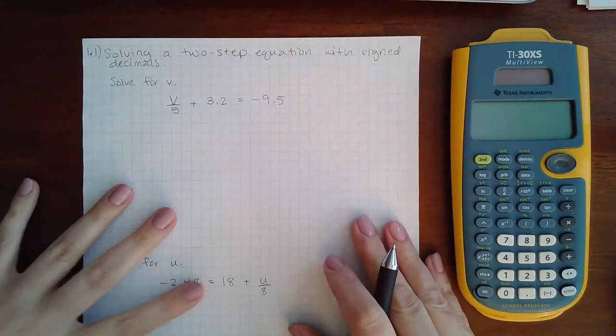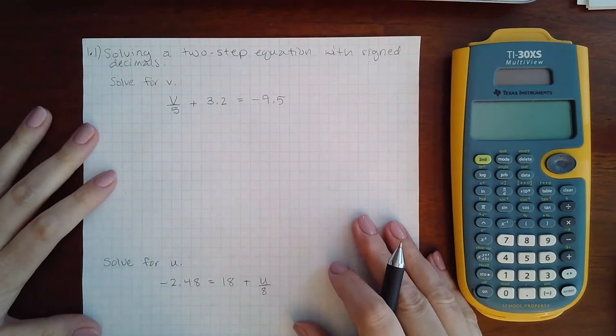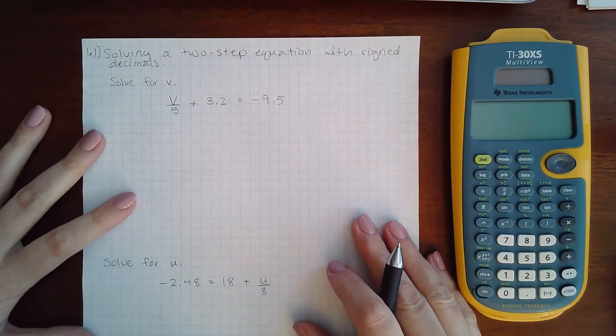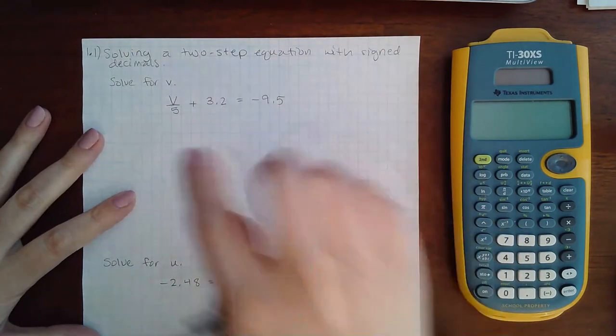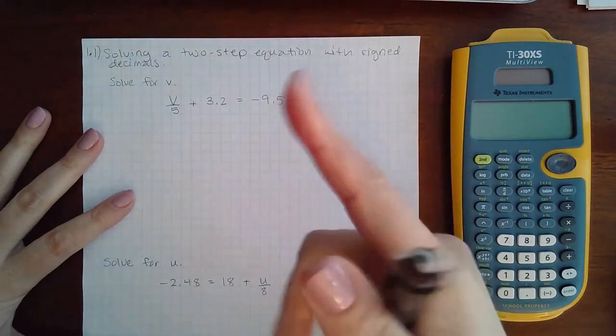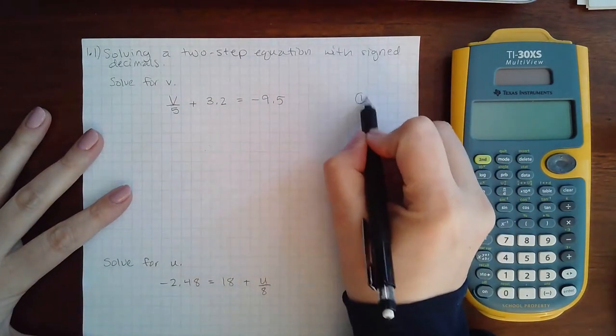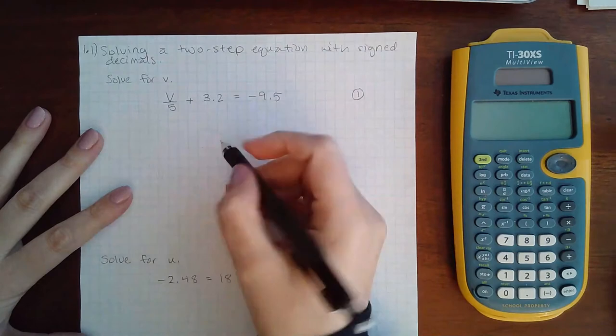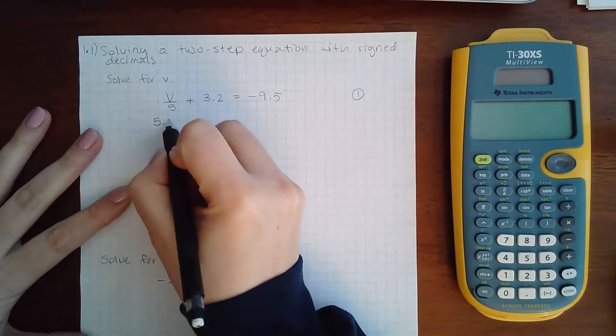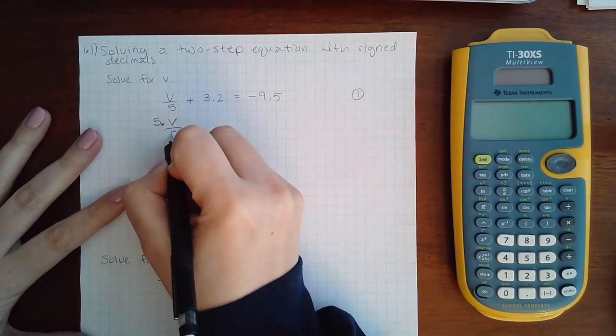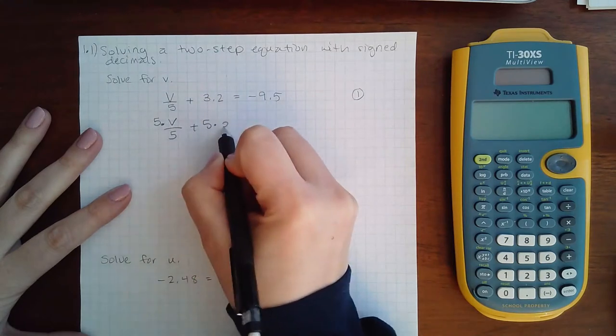Here we have solving a two-step equation with signed decimals. Anything with fractions, the first step is to eliminate those fractions. So I'm going to multiply 5 to every term.